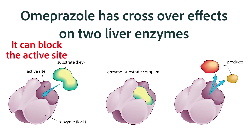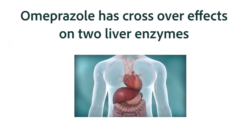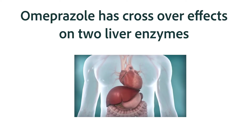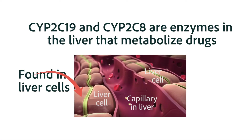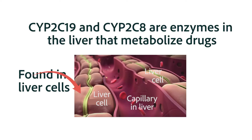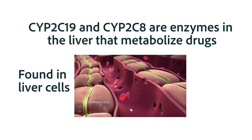Omeprazole can have a slight binding to some of the liver enzymes. Remember that liver enzymes are made to metabolize drugs. When we read about omeprazole in a drug manual, the manual will say that omeprazole inhibits CYP2C19 and CYP2C8. When you hear about a medication that affects liver enzymes — abbreviated as CYP followed by letters and numbers — it basically means you need to be careful about combining that medication with other medications.